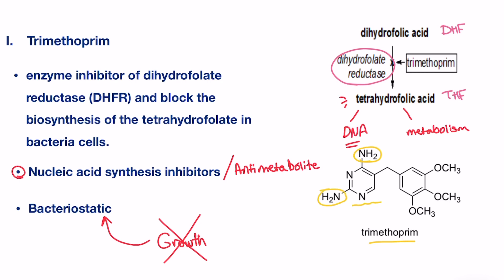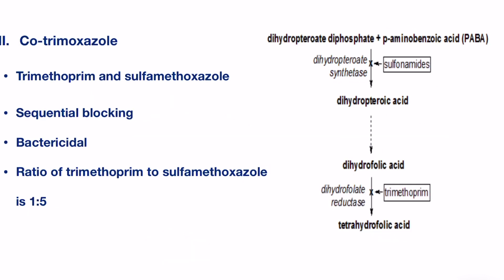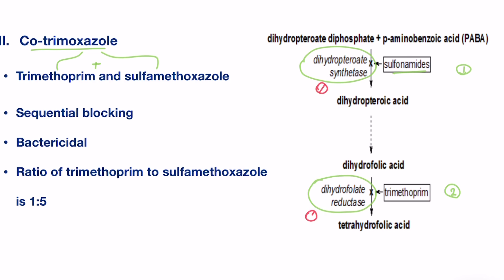Now that we have got trimethoprim covered, let's discuss the combination formulation in which trimethoprim is part of. This combination is known as cotrimoxazole, which is a conjugation of trimethoprim with sulfamethoxazole. We must have known that sulfonamides target dihydropteroate synthetase, while trimethoprim acts against dihydrofolate reductase. Therefore, two enzymes in one biosynthetic route are inhibited. This approach is called sequential blocking.